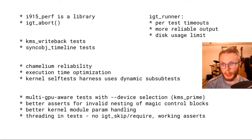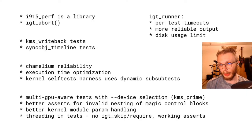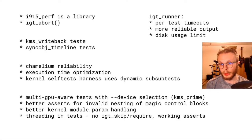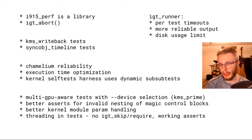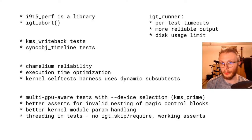We now have multi-GPU over tests, and the device selector can select multiple GPUs. There's a sample test that uses that new API: kms_prime, so you can select which two devices you want to test prime between. We also have better asserts for invalid nesting of magic control blocks — IGT depends on blocks like igt_subtest, igt_skip, and igt_assert, and there are various invalid nesting scenarios we now loudly assert on and print a message explaining what went wrong.